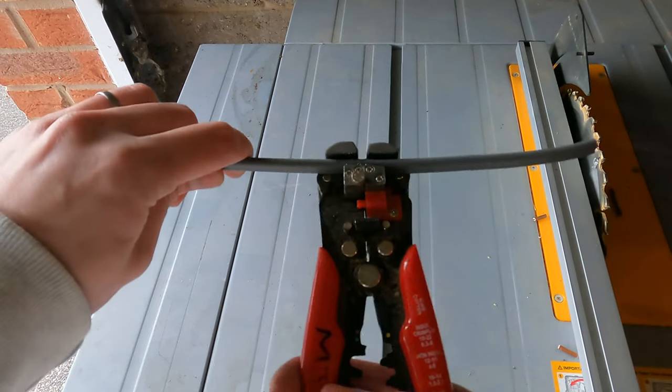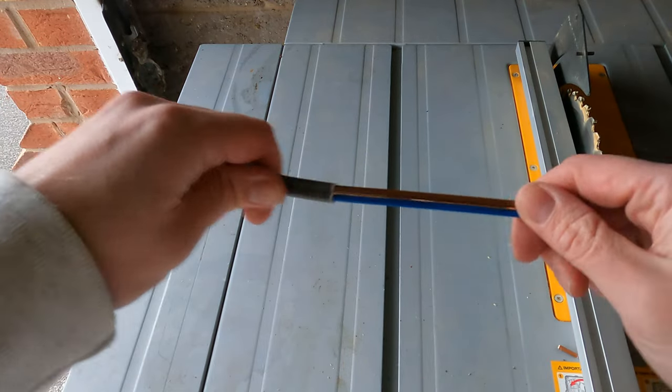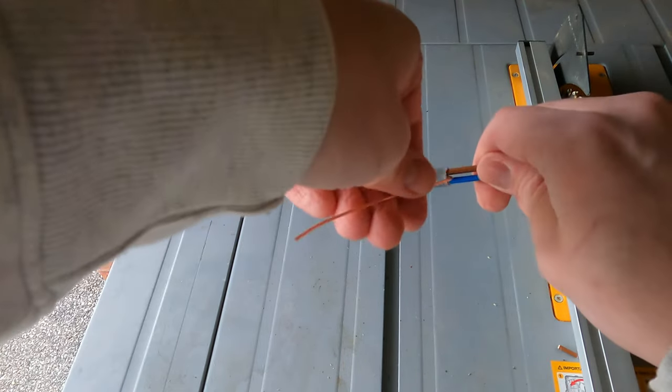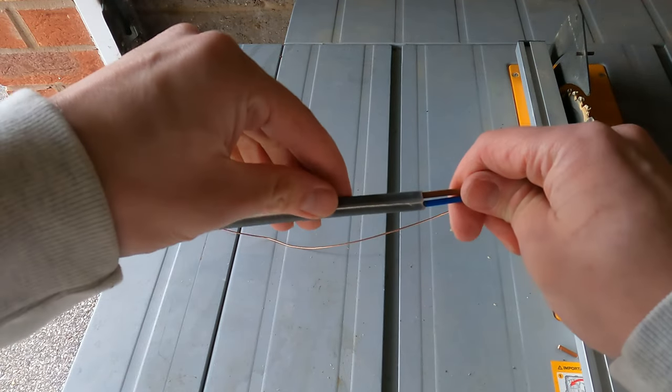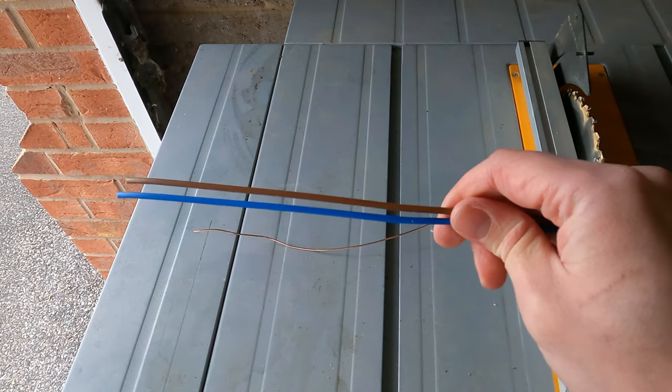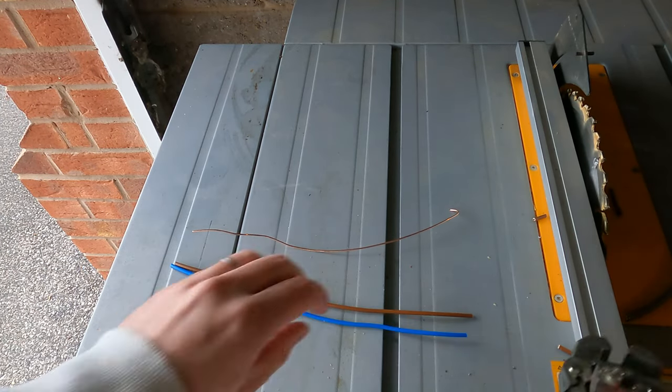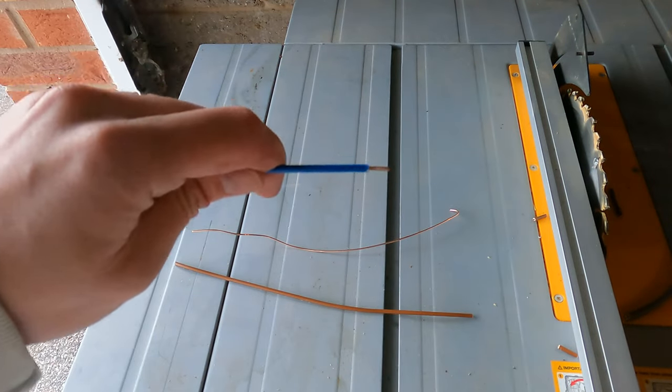So I'll just use my wire strippers here to strip the cable. And I grab the earth cable and I just rip down the sheath with the earth cable. And then that allows me to take out my live and neutral cables, and then you can just use your wire strippers to strip down the cable, easy as that.